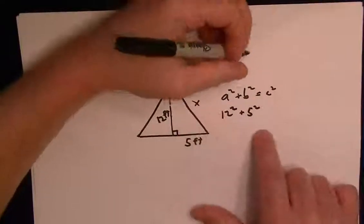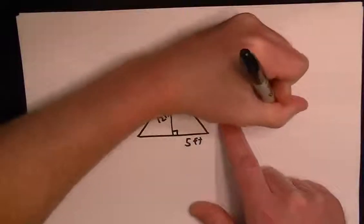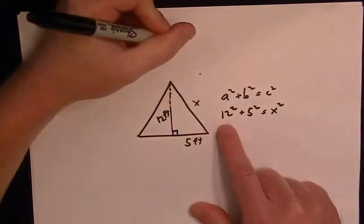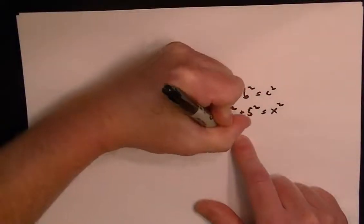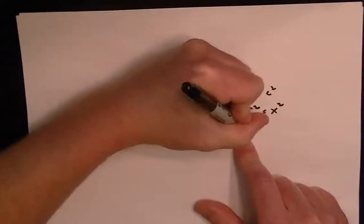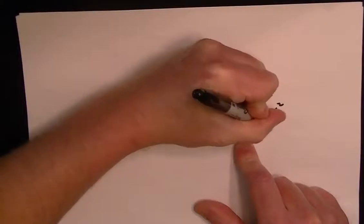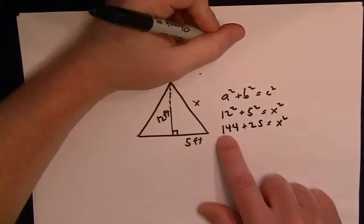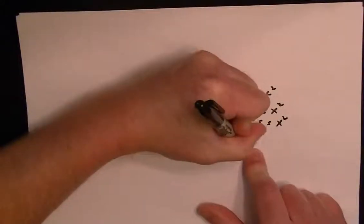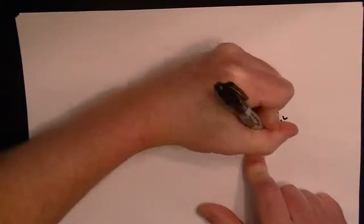So now we've got 12² is 144 plus 25 equals x². If you add that up, it equals 169 equals x².